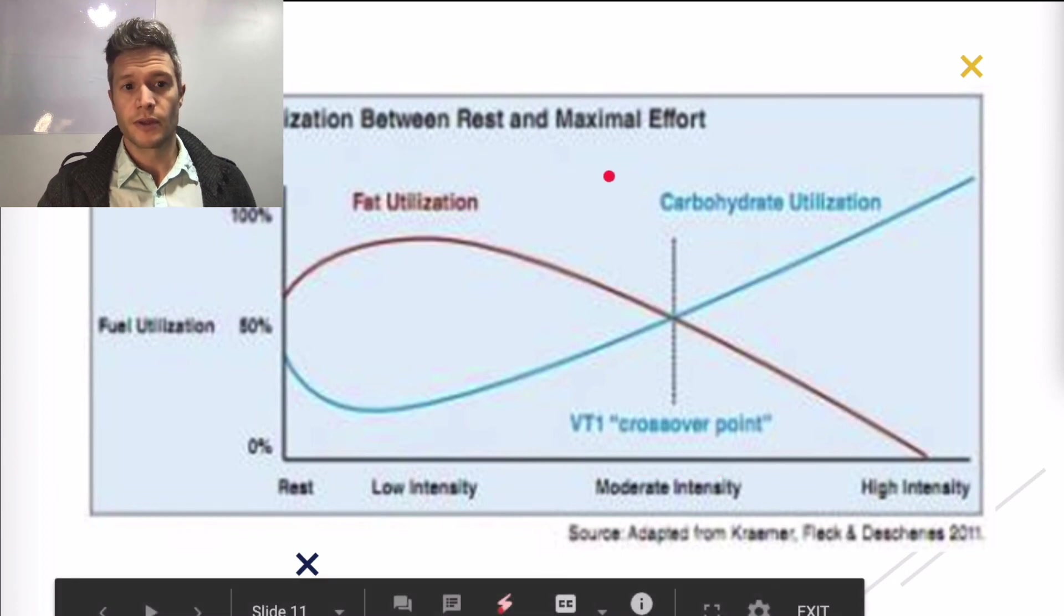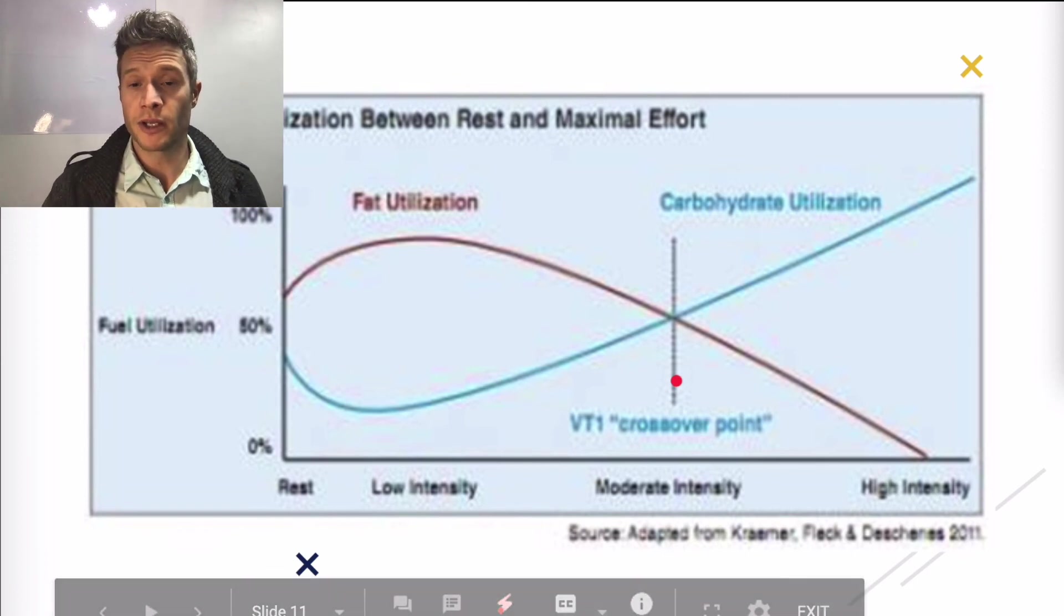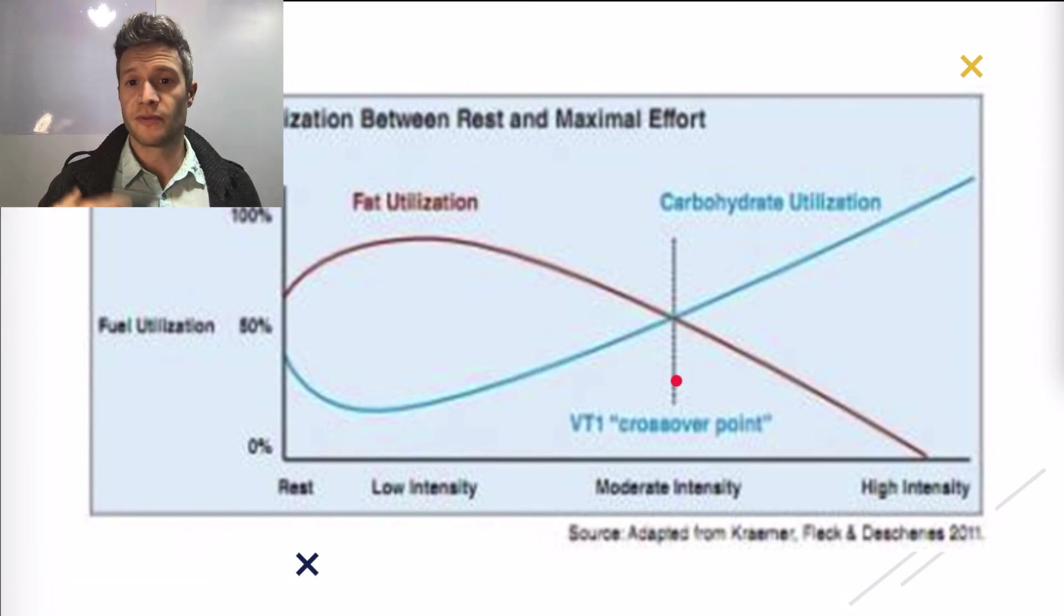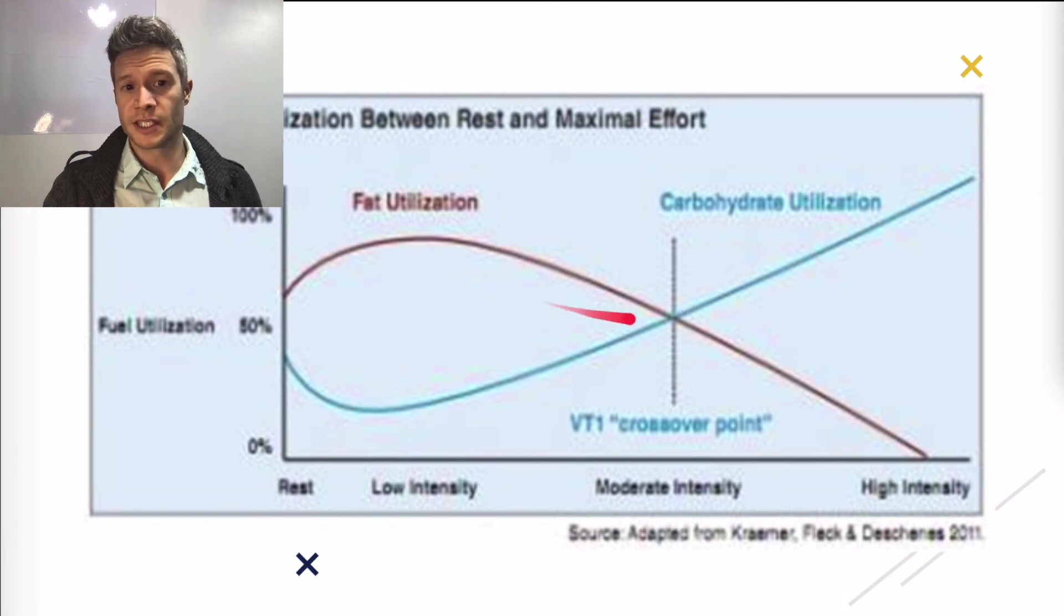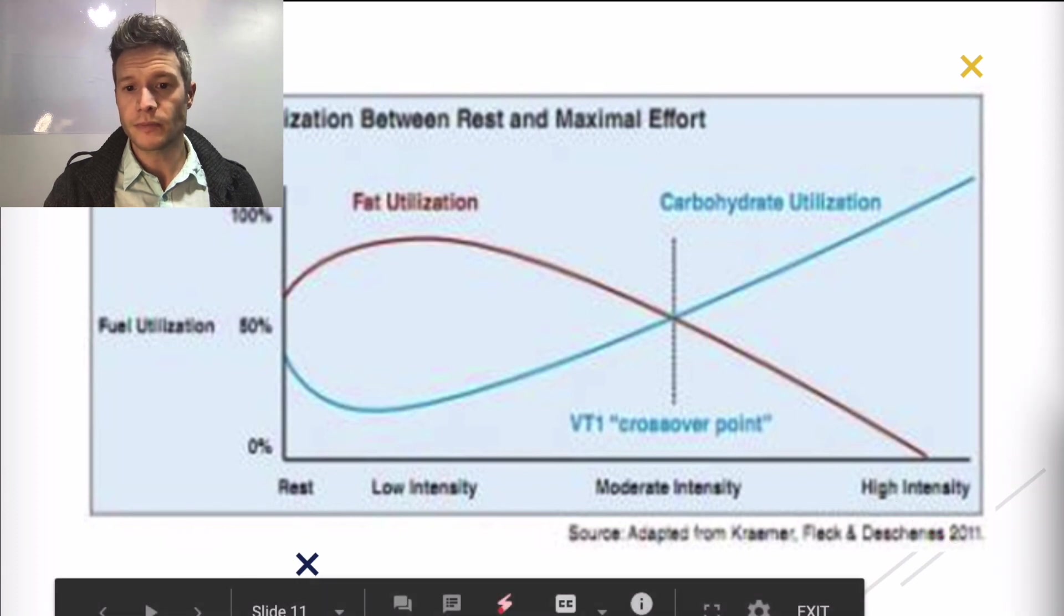So VT one, one of the things we can do when we test for this is we can figure out exactly at what point. So what ventilation paired with that heart rate can we figure out where this is occurring? And then we can design programs that are going to be quote unquote fat burning versus ones that will dip into the carbohydrate storage and leverage that.